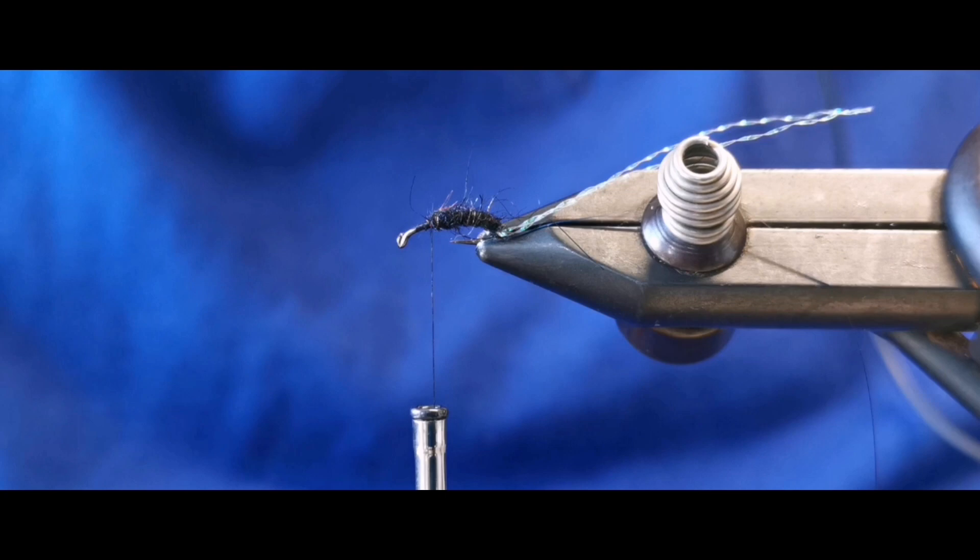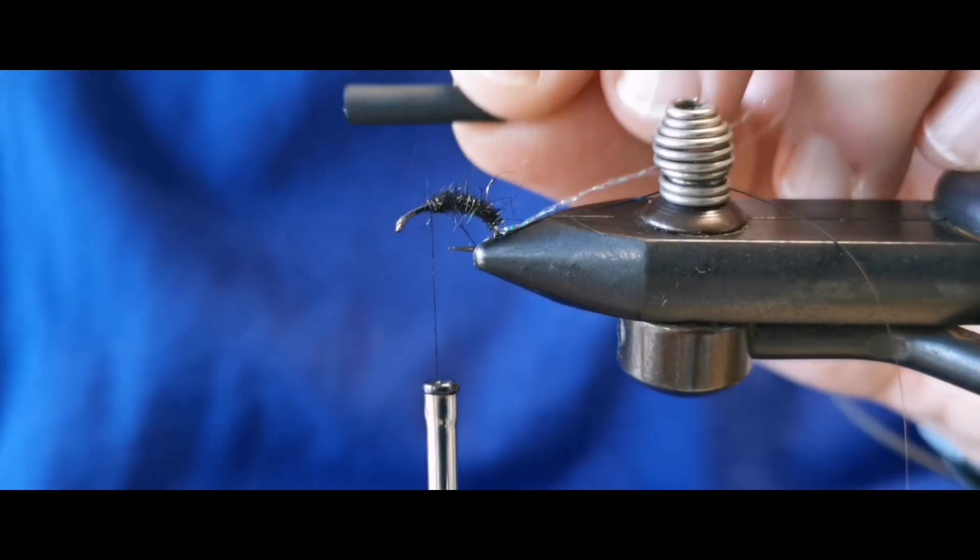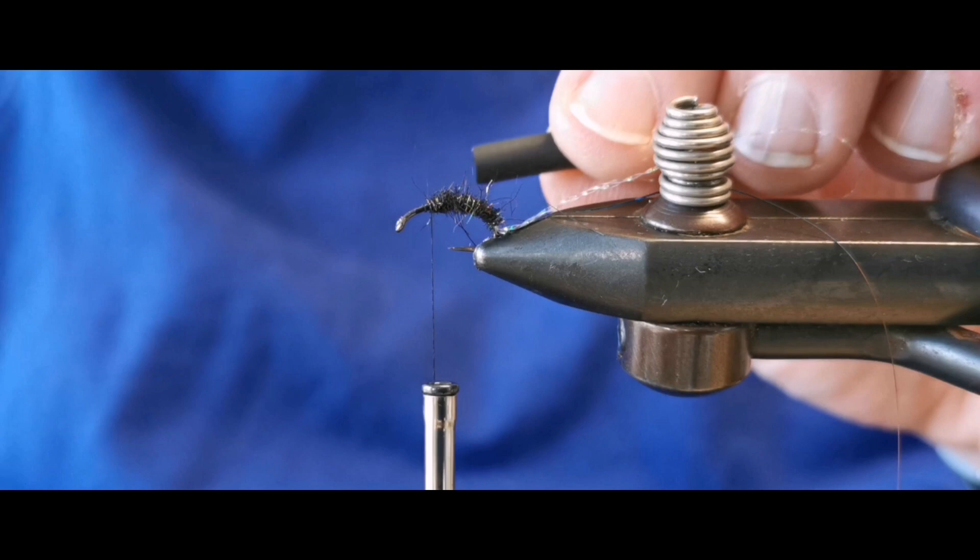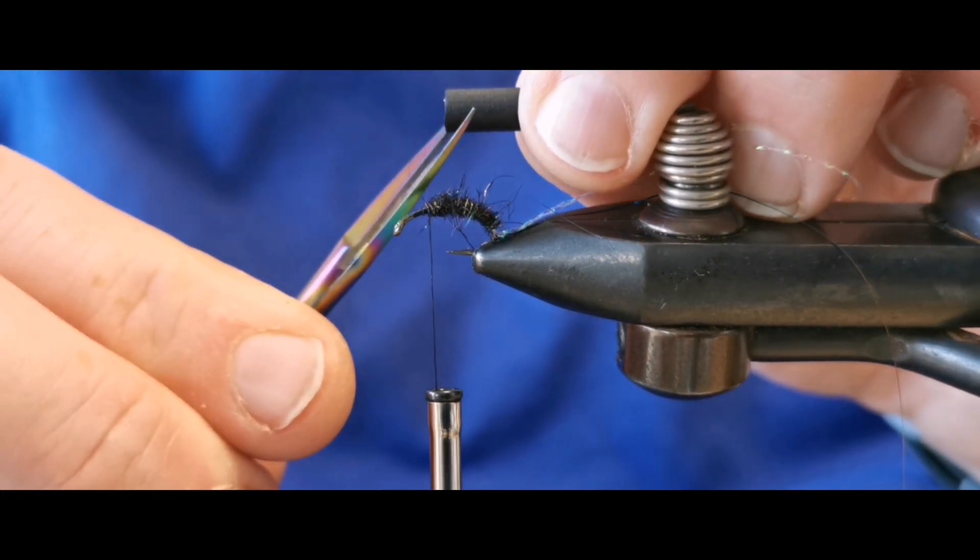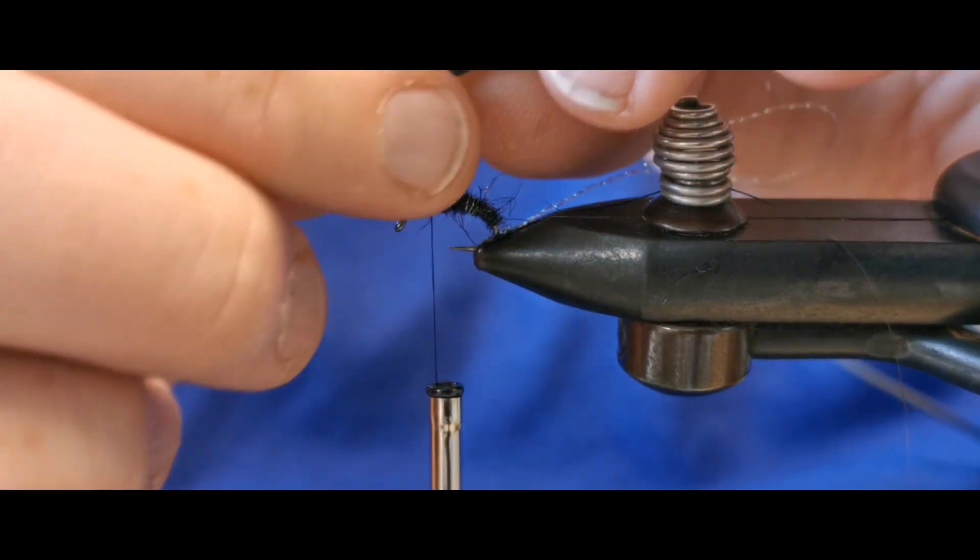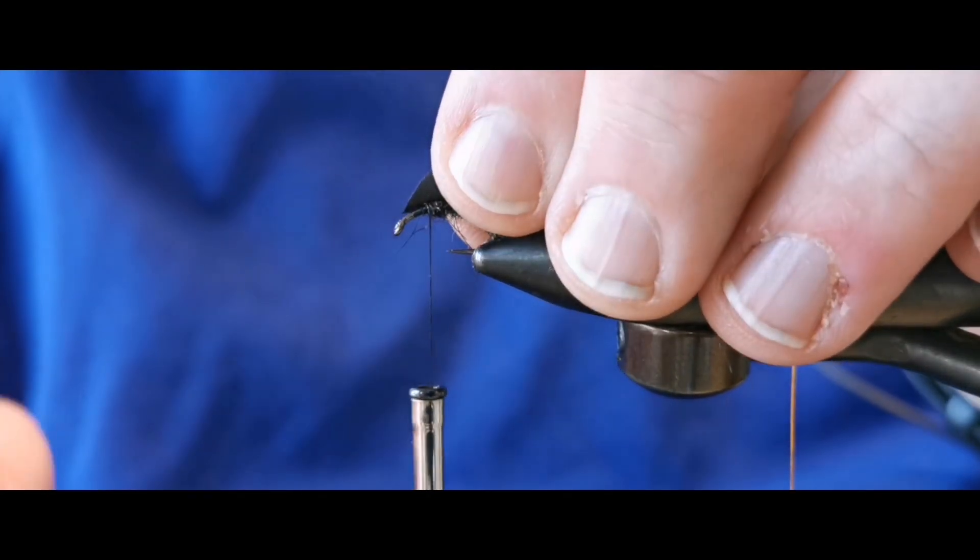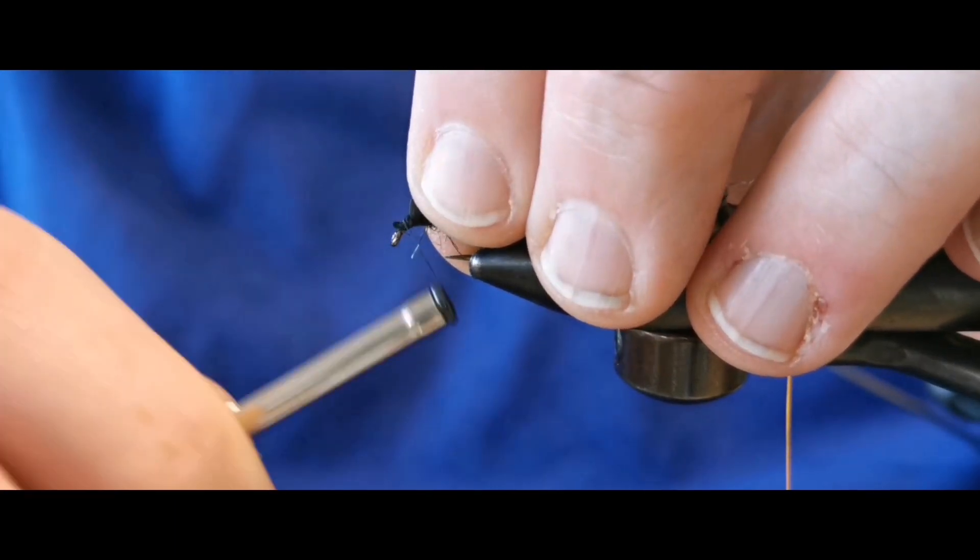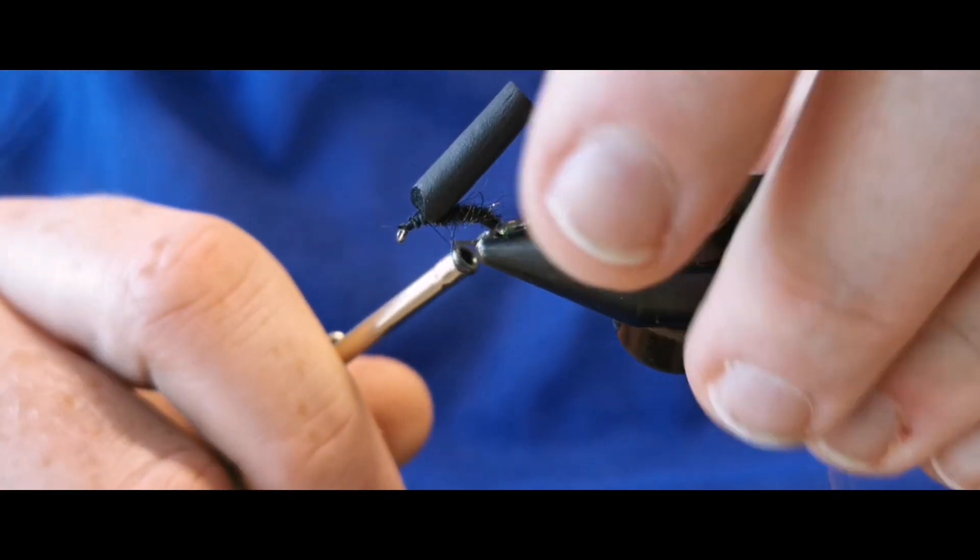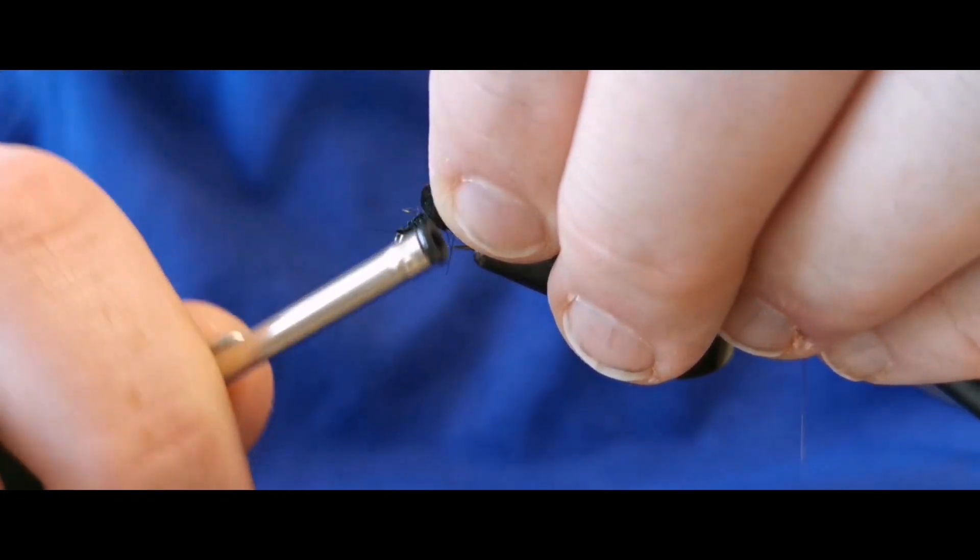So the next part on the fly is our baby foam. Now this is a 5mm black boogie foam. Now what we do with this is the first part is trim this back on an angle, and we'll see where that tapered cut is falling away. Tie that on and then up to the front of our hook and tie that down, and run that back to where our body, where we finished with the fly.